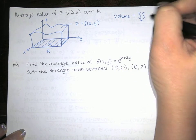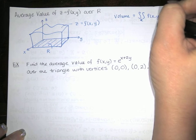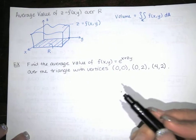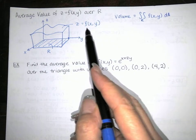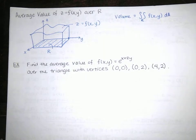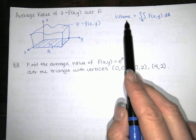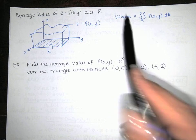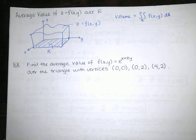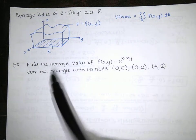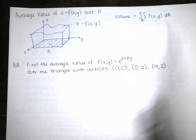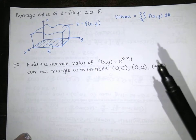We find the volume under that surface by computing the double integral over R of f of xy dA. If this function f of xy is not non-negative all the time — if it isn't always positive or possibly zero — then this would be a net volume: volume above the xy plane minus volume below the xy plane, bounded by this surface and the xy plane.